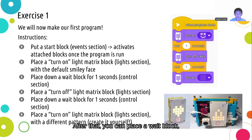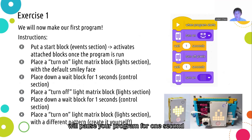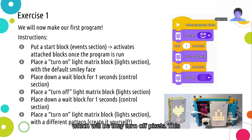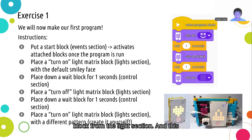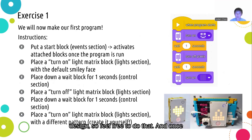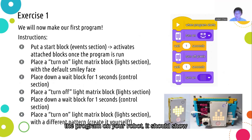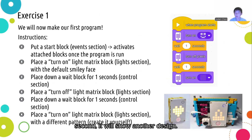After that, place a wait block found in the control section, which will pause your program for one second before continuing to the next block, which will be the turn off pixels block. This will turn off all the pixels on your light matrix. Then wait another second and add another turn on display block from the light section, this time using a different pattern — it's pretty fun to create your own design. Once you finish programming and run the program on your robot, it should show one design, turn off after a second, then show another design after another second.